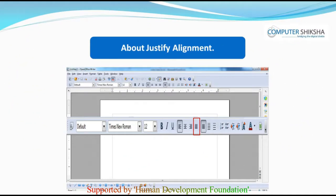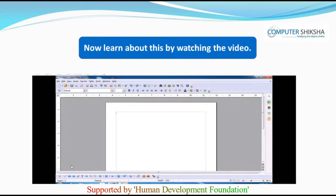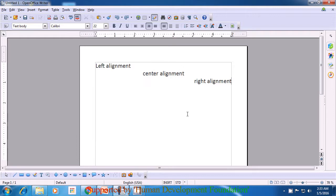Next, we use justify alignment to make all the lines appear similar — they will start at the same place on the left and end at the same place on the right. By selecting the justify alignment, all lines will become similar and the text or paragraph will come to the left side of the page. The shortcut command for this is Ctrl+J. Now, learn about this by watching the video. Justify alignment will make all your lines on the writer page appear similar and they will be left aligned.